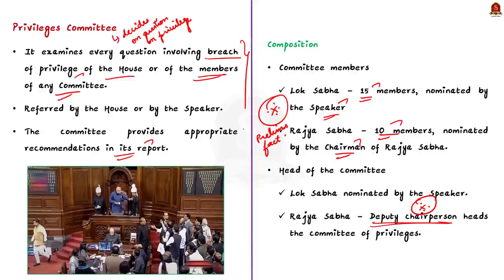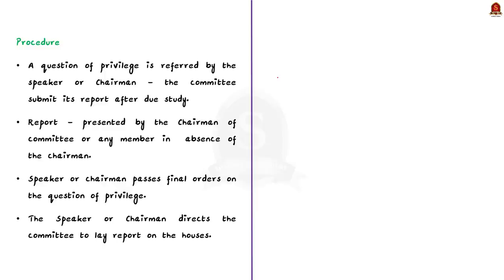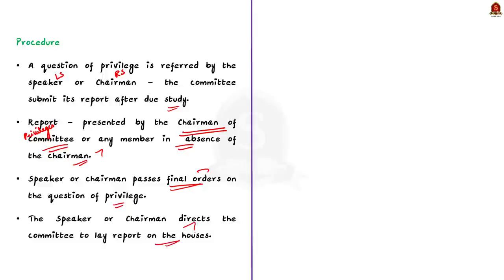When a question of privilege arises, it is initially referred to the committee by the Speaker of Lok Sabha or the Chairman of Rajya Sabha. After due study, the committee submits its report to the Speaker or Chairman — usually submitted by the committee chairman, or by any member in the chairman's absence. The Speaker or Chairman may then pass final orders on the question of privileges, or direct the committee to lay its report on the table of the House.